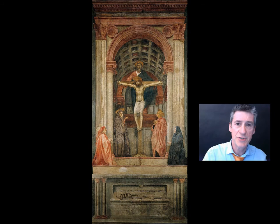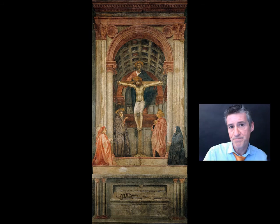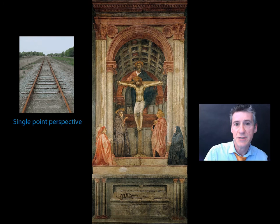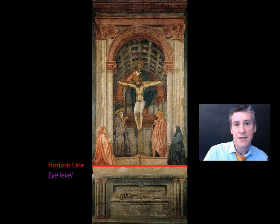But Masaccio didn't just leave it there. He used the lines of perspective to exaggerate the effect that people were experiencing when they stood in front of the painting. For instance, we all know that parallel lines in single point perspective meet at the horizon line.